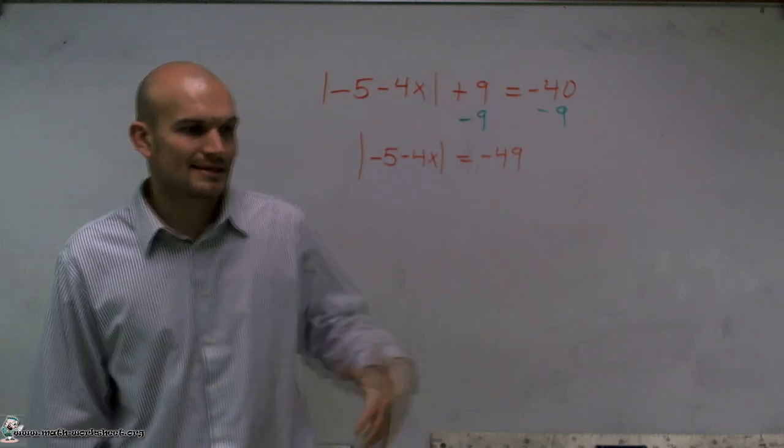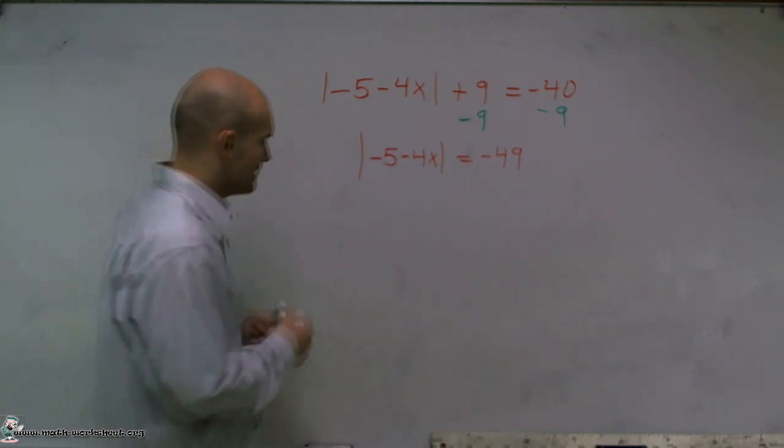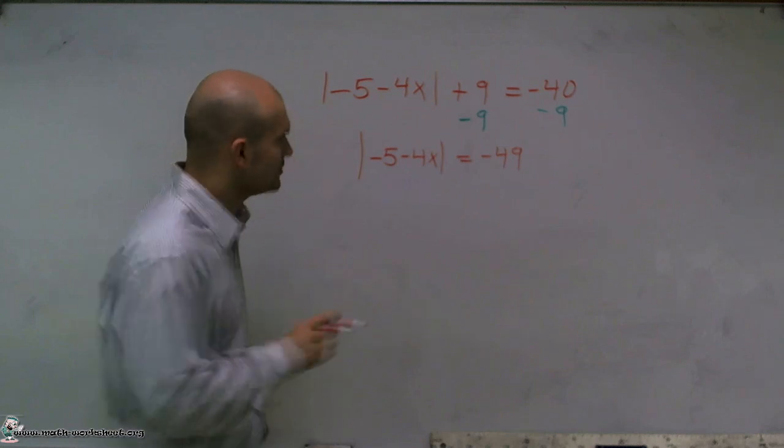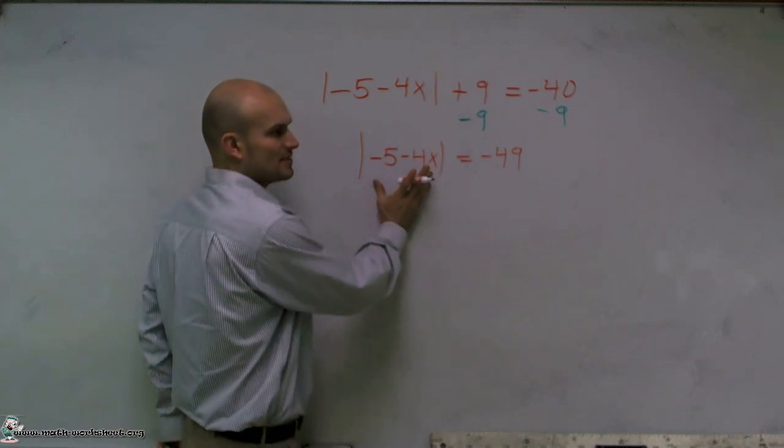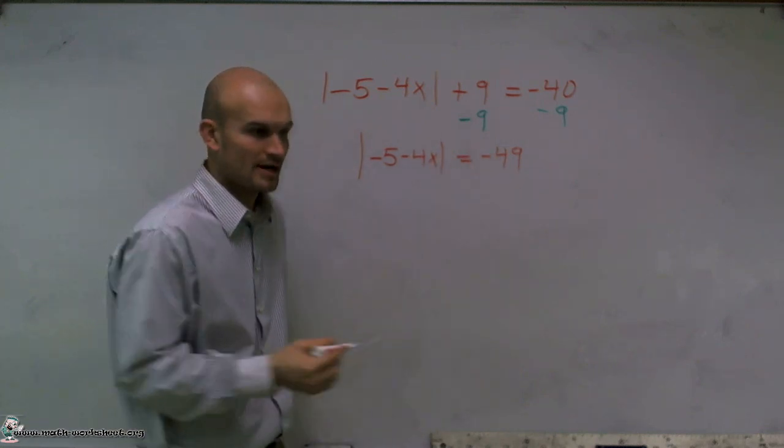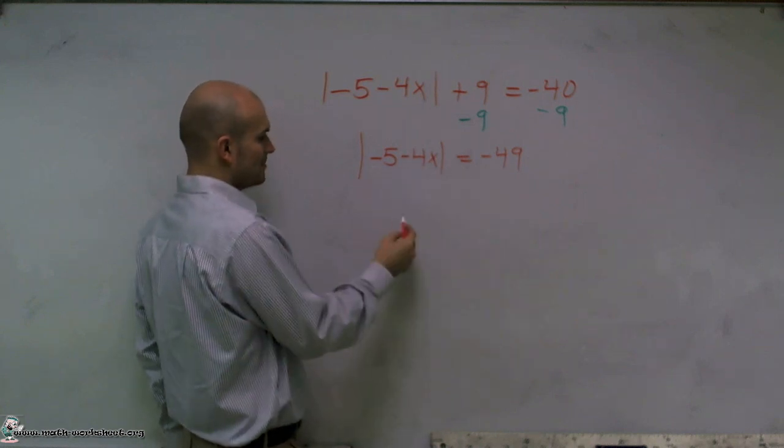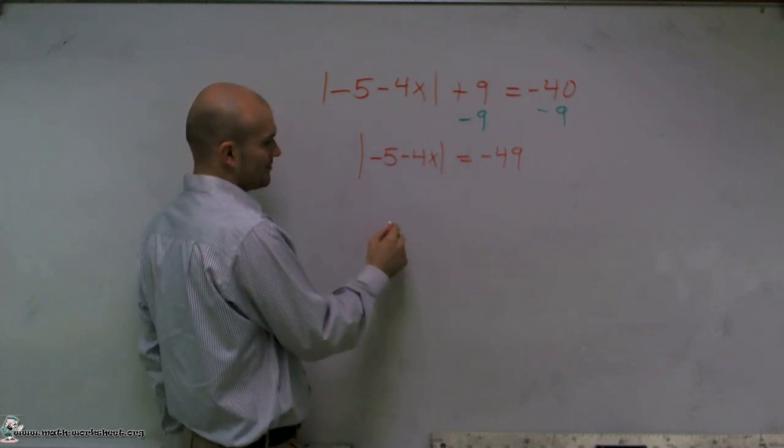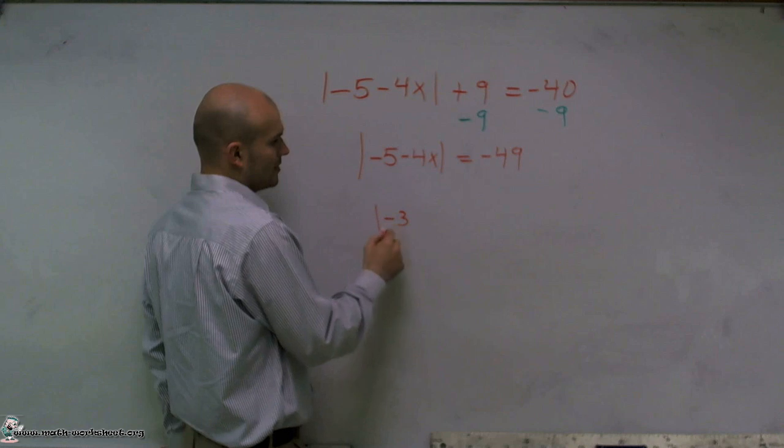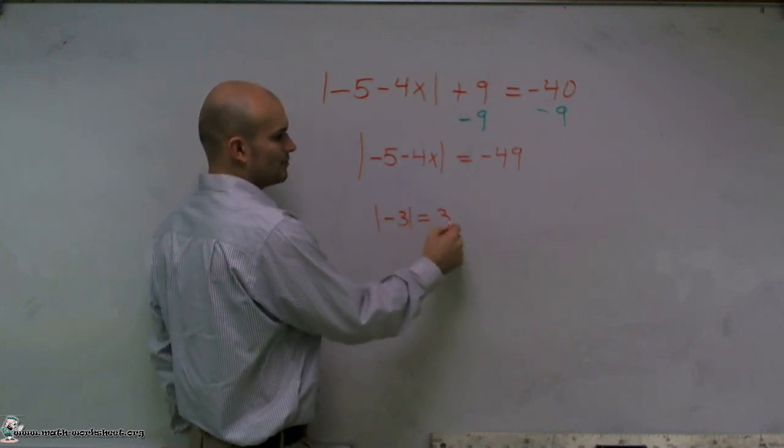And that becomes a problem because if we look at it, you cannot have the absolute value of something equal a negative number, right? Because let's say my number was, I don't know, negative 3. Well, the absolute value of negative 3 is still going to equal 3.